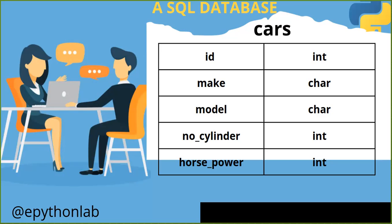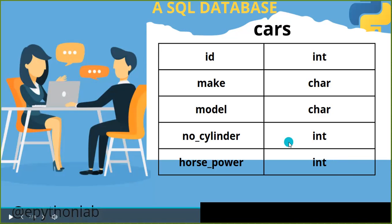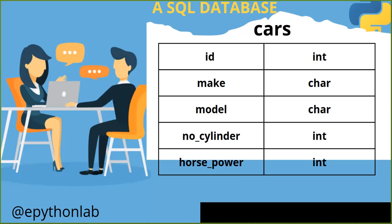Let us assume there is a cars database table. This table has columns: ID, which is an integer; make, which refers to the brand of the vehicle; model, which refers to a specific model of the vehicle; the number of cylinders that the model has; and horsepower, which is an integer. This table may have several rows - up to 100,000 records.